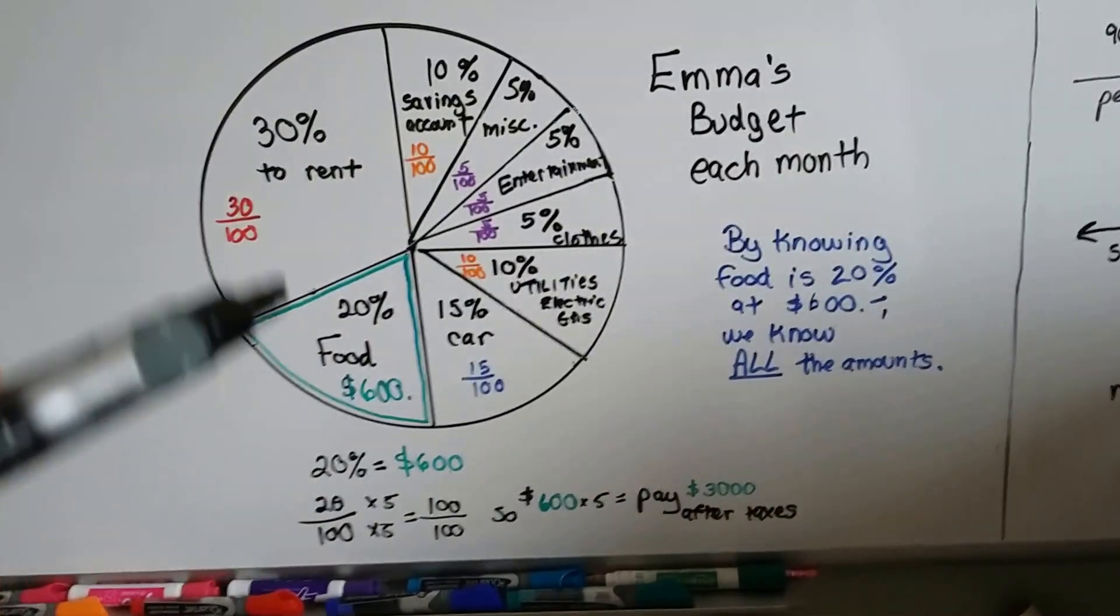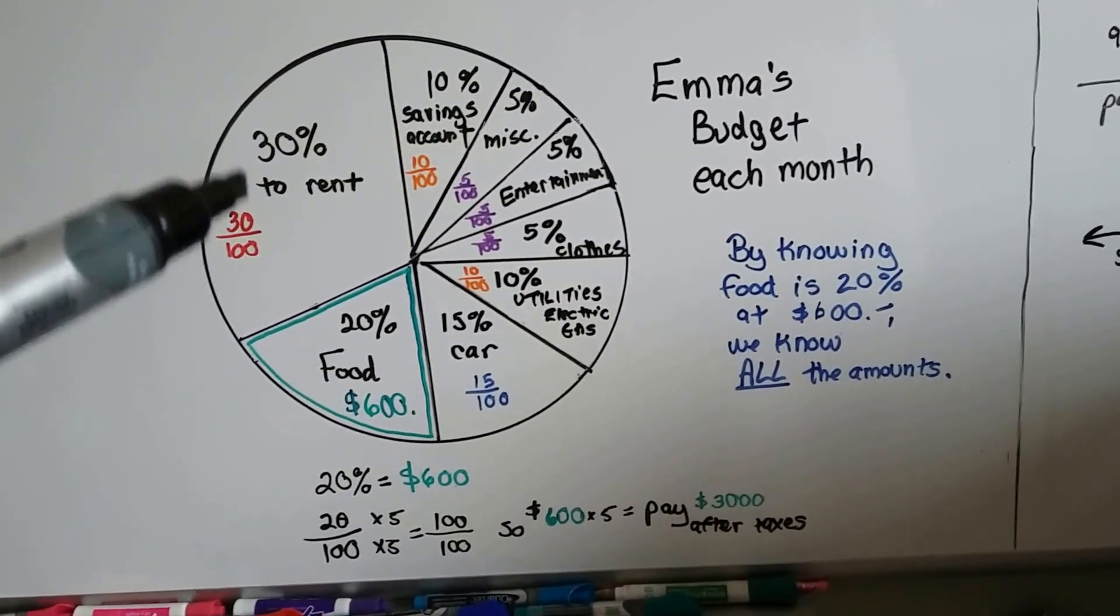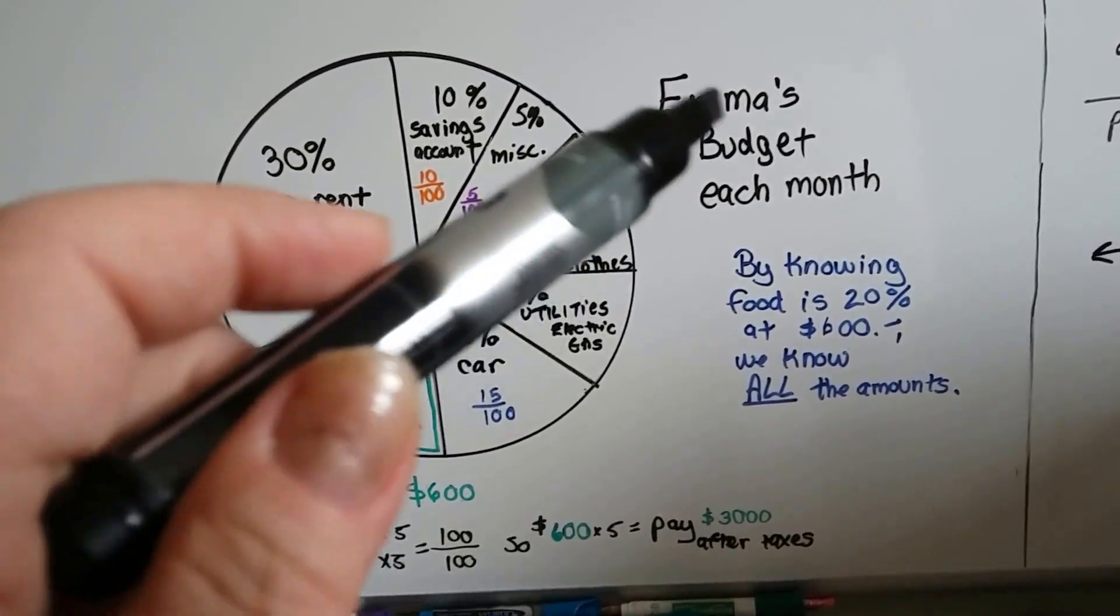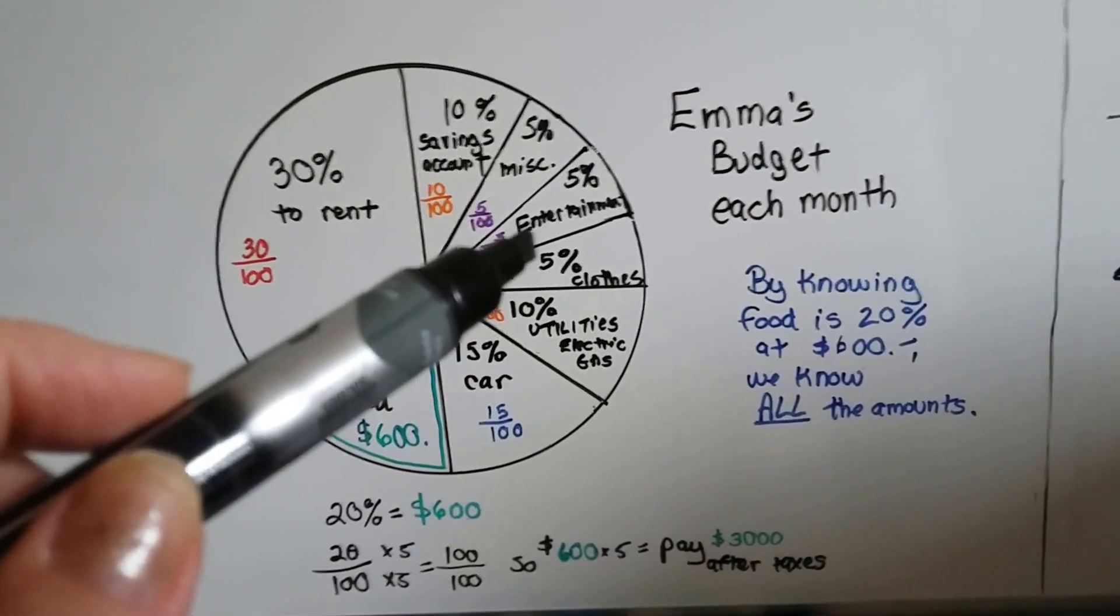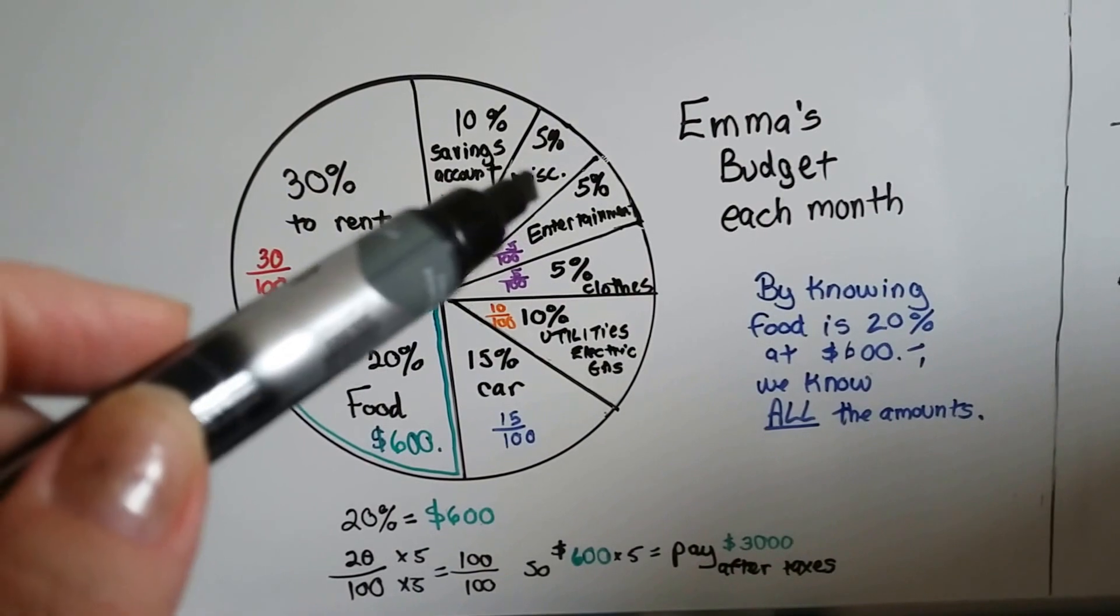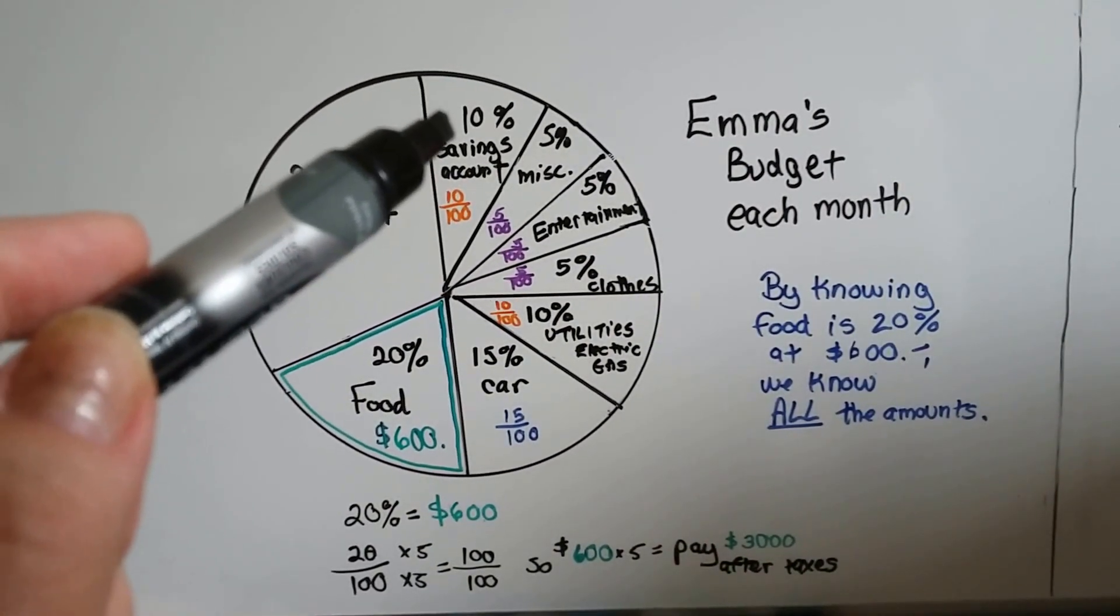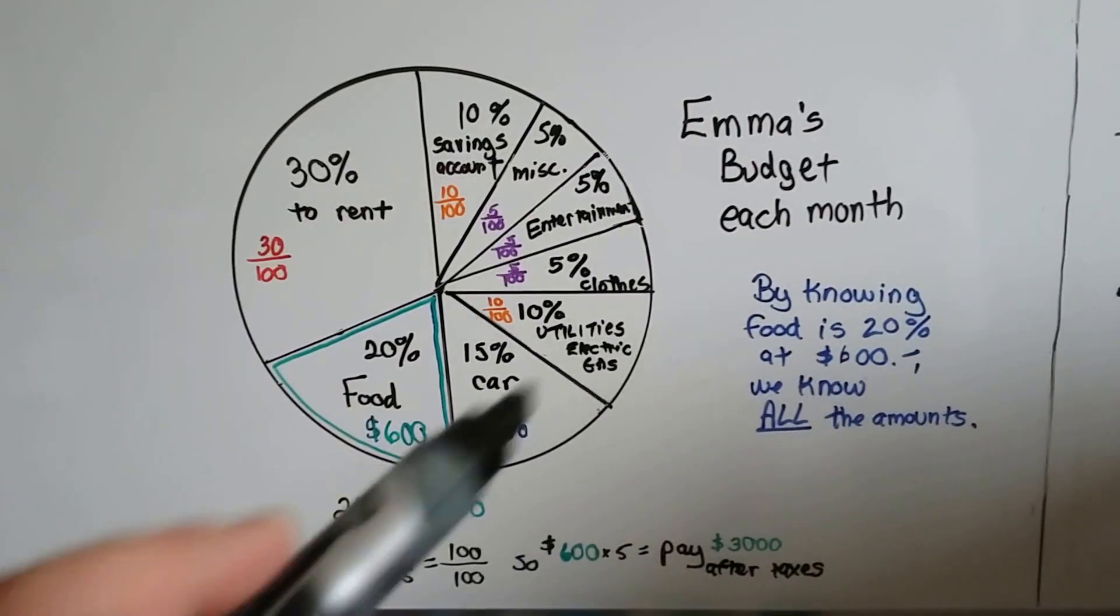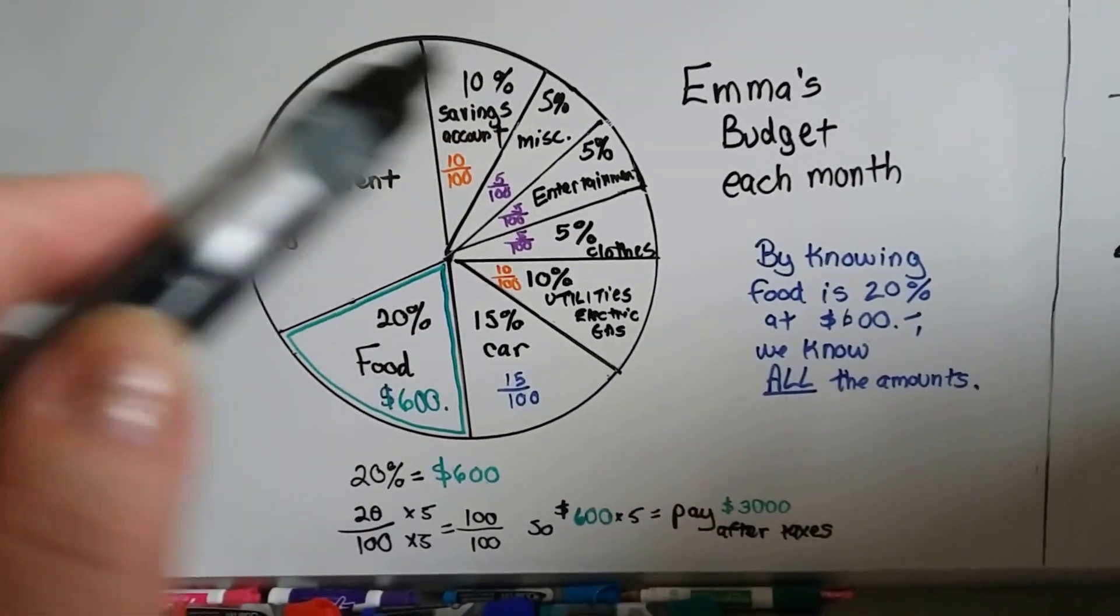If this is Emma's budget, she spends 30 percent for rent, 20 percent for food, 15 percent of her money on a car. This is for each month. Ten percent on utilities, five percent on clothes, five percent on entertainment, five percent is miscellaneous for just things that pop up. And she puts 10 percent of her monthly earnings into savings. If you add all of the percentages up, you'd have a hundred percent because that would be her pay. All of her pay.